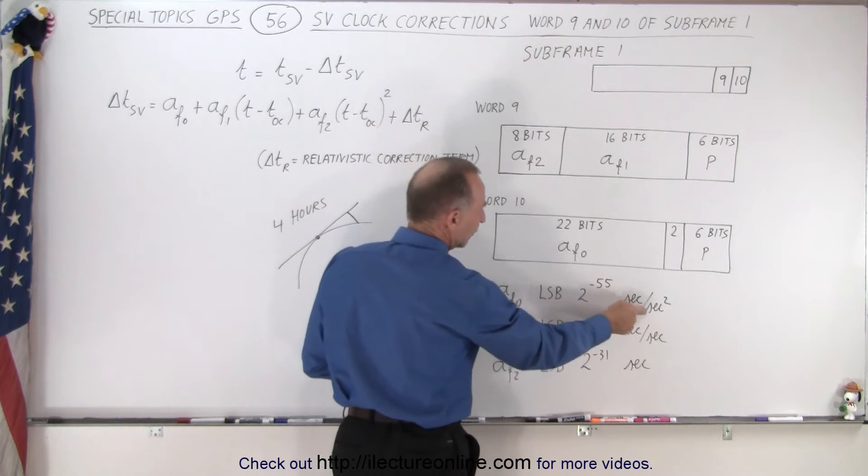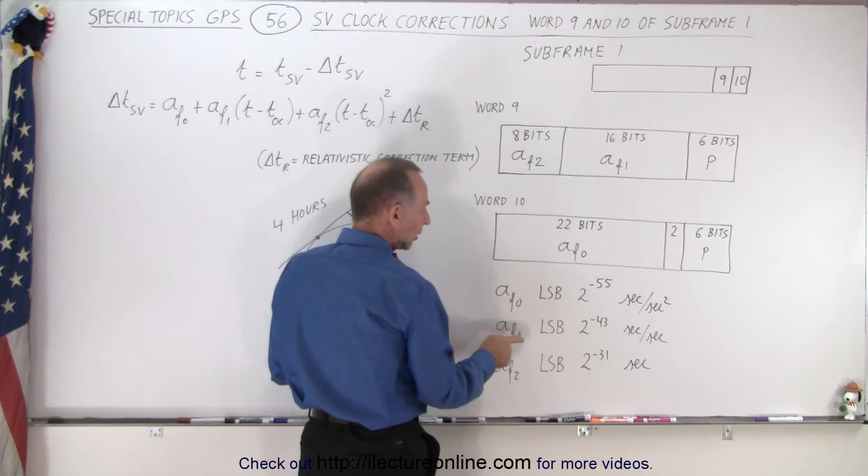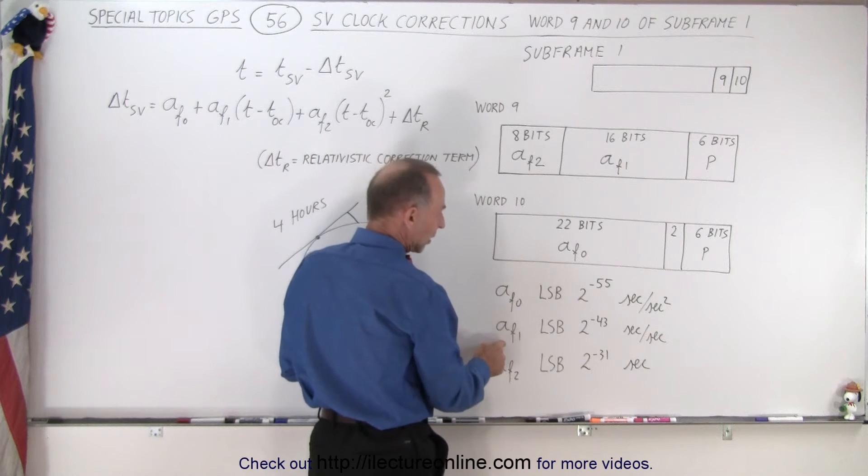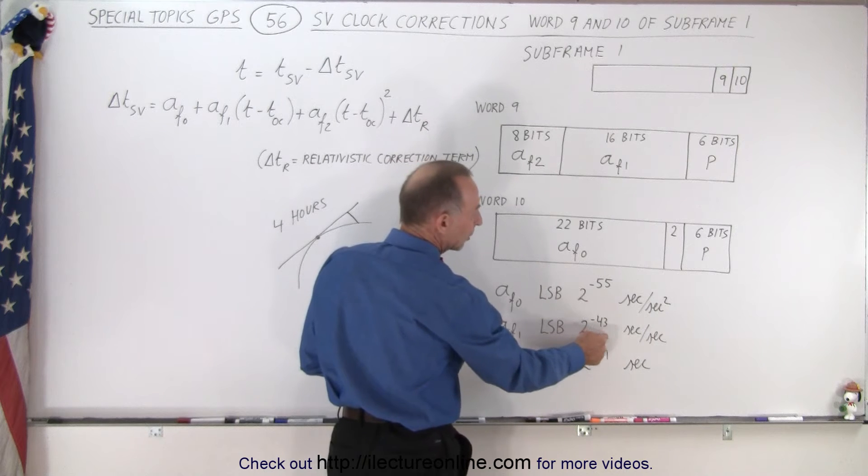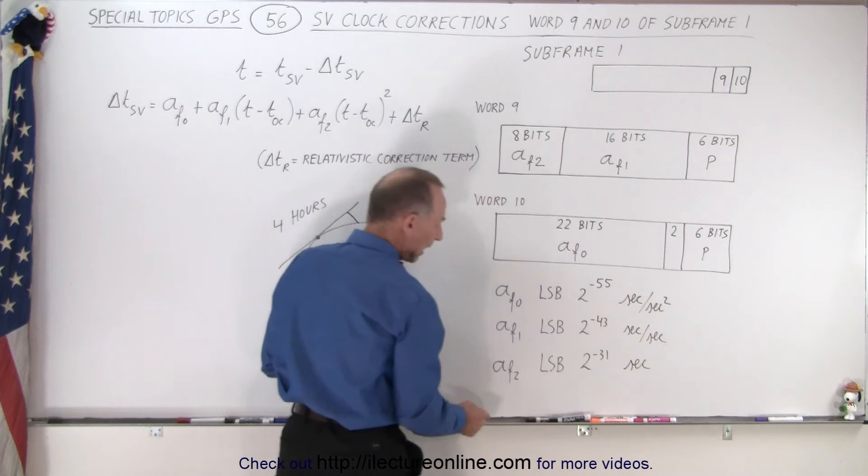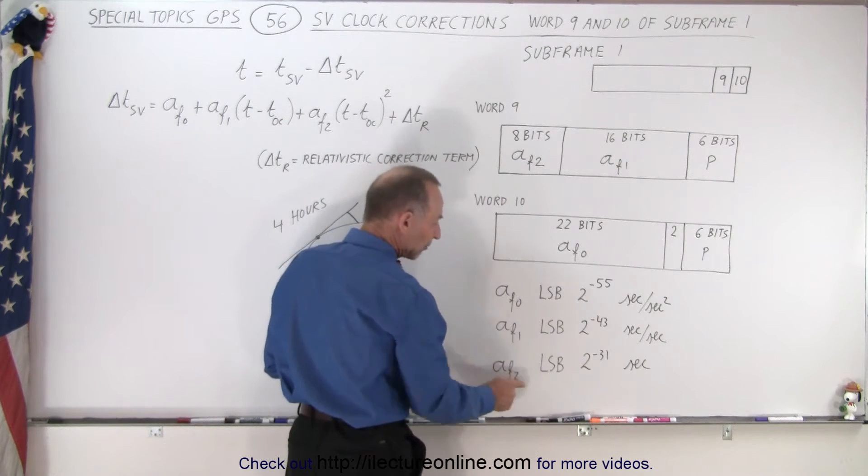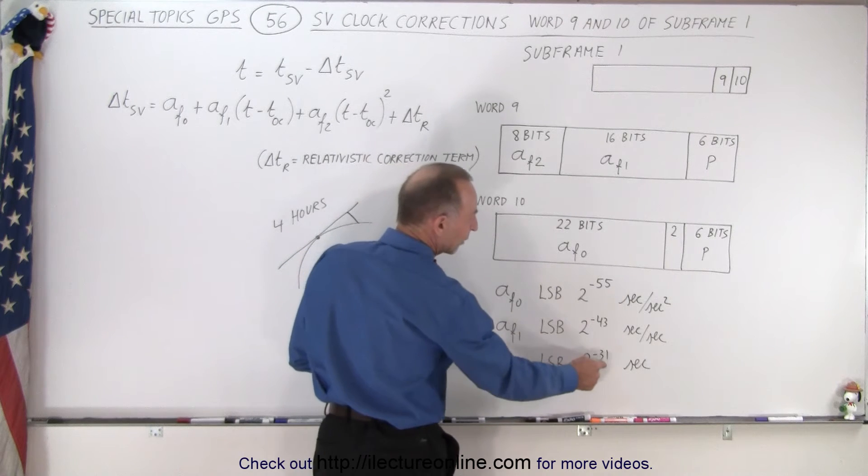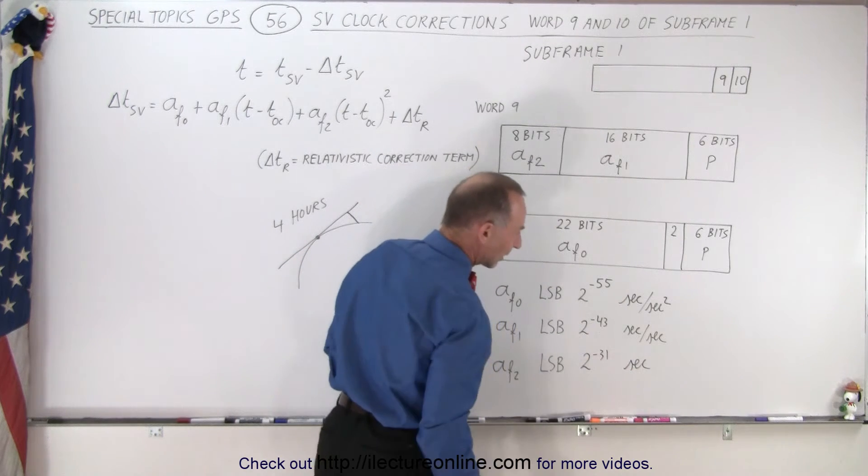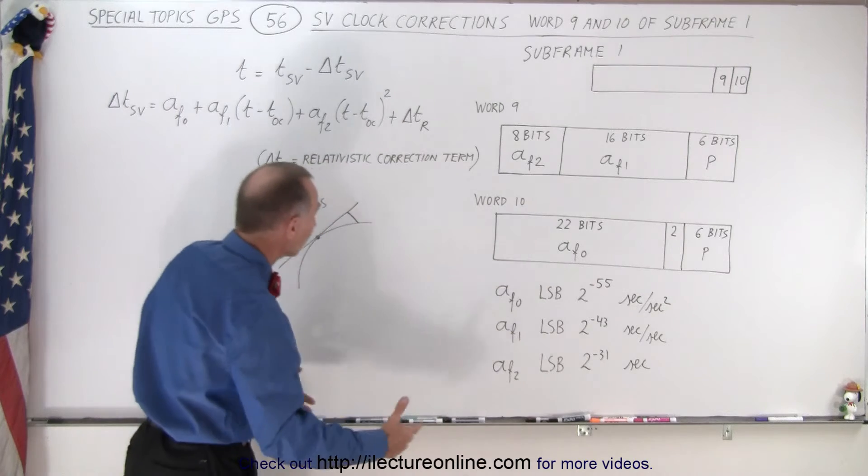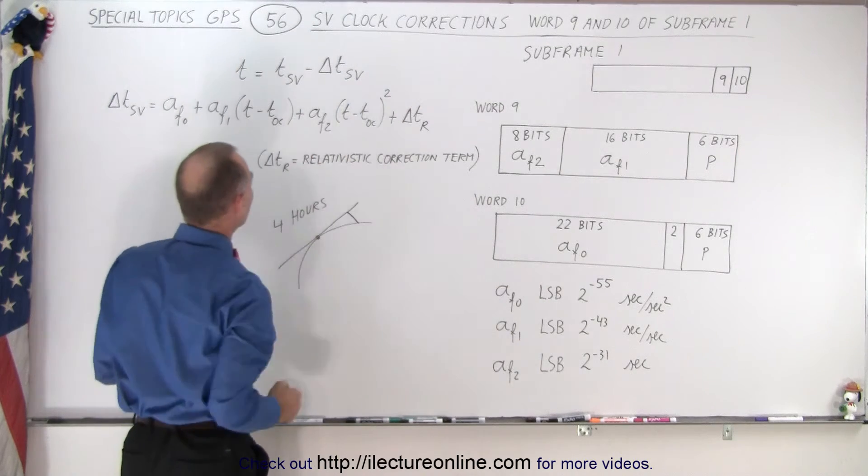The units are seconds divided by seconds squared. The LSB of the AF1 is 2 to the minus 43, the units are seconds over seconds, and the value the LSB for the AF2 is 2 to the minus 31 and the units are seconds. They're necessary of course when they're plugged in to our quadratic equation.